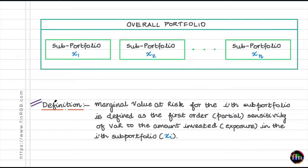Let's formally define marginal VAR now. Think of marginal value at risk, or marginal VAR, for the ith sub-portfolio as the first-order partial sensitivity of the total portfolio VAR to the amount invested in the ith sub-portfolio — that amount we've called X_i. So if I were to bump X_i by a tiny amount, leaving the X's of the other sub-portfolios unchanged, and find out how the total portfolio VAR changes, that sensitivity measure is what we call the marginal VAR.